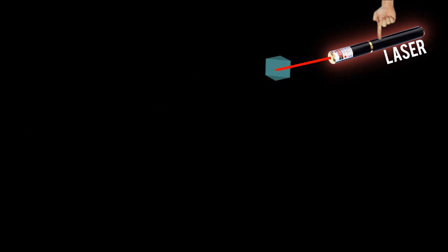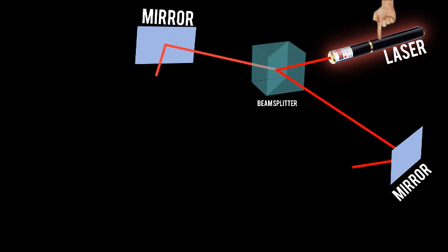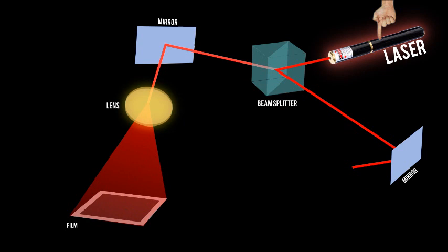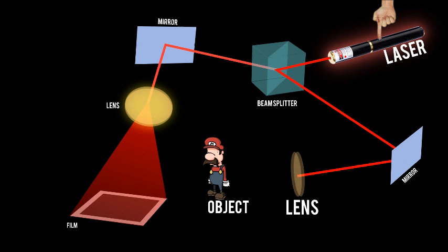How are holograms made? A beam of laser light is optically separated into two beams by a beam splitter. One, the reference beam, is directed toward a piece of holographic film, travelling through a lens and expanded so that the light covers the film evenly and completely. The second, the object beam, is directed at the subject of the composition and similarly expanded to illuminate it.